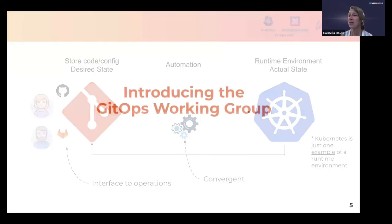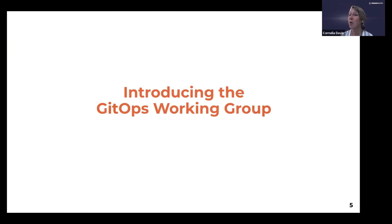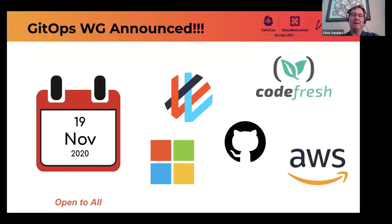With that, I'd like to hand it over to my colleague Chris to tell you more about the GitOps Working Group — its history, what we're doing, and those types of things. Thanks, Cornelia. She gave you a quick overview of what GitOps is and its importance, and she'll talk more about it later. This working group was formed last November and was announced with several initiating companies, including Codefresh, Amazon, GitHub, Weaveworks, and Microsoft. As you'll find out, this is a working group that is open to all.